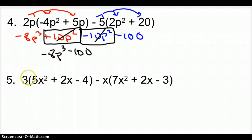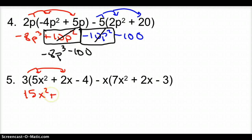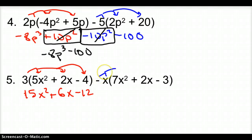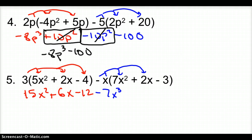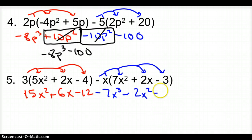Let's try the next one. I just have a lone 3 times this polynomial, which gives 15x squared, plus 6x (multiplying the 3 times 2x), and then 3 times negative 4 gives negative 12. Now, we also have a negative x term, so I take that negative x times 7x squared to make it negative 7x cubed — because you add the exponents when you multiply, not multiply the exponents — adding the exponents, only multiplying the numbers.